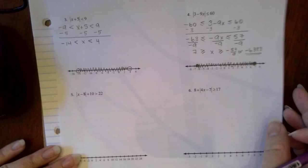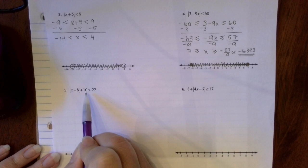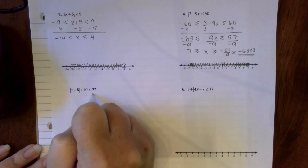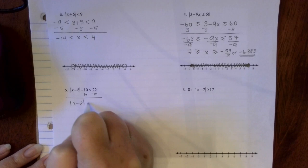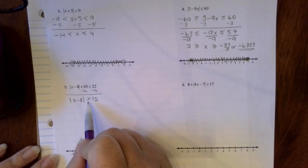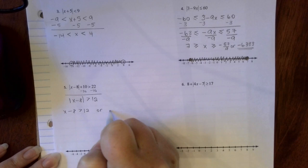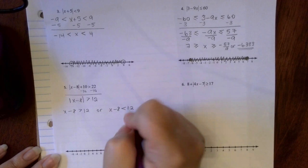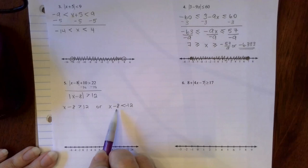Number 5 — we've got to be careful because there's a 10 hanging out outside of the absolute value. You can't start writing the equation until you move that 10, so you've got to connect the numbers outside the absolute value sign. Subtract this 10 over: absolute value of x minus 8 is greater than 22 minus 10, which is 12. Now we can say it's greater than, so it's going to be an or problem. Write x minus 8 is greater than 12 or x minus 8 is less than negative 12 — flip the inequality and make it negative.